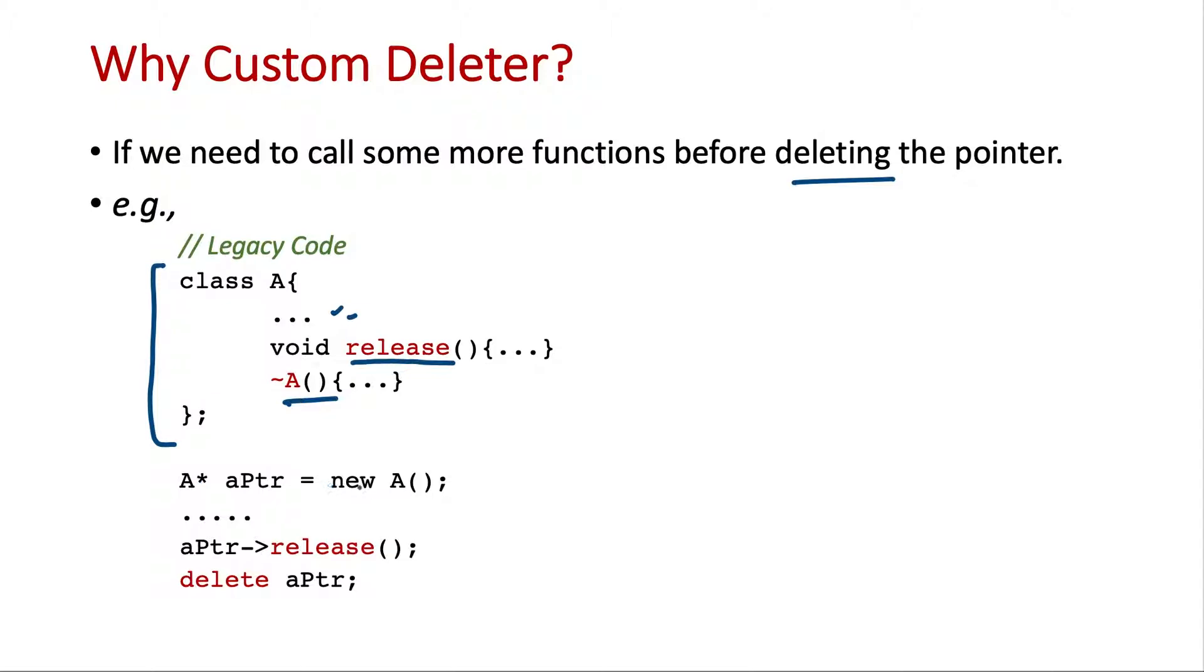So the client code using this creates the pointer of this class. Then it calls the release method which will free out the resources. And then ultimately calls delete which will call the destructor of the class.